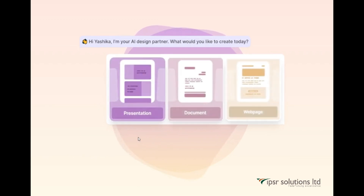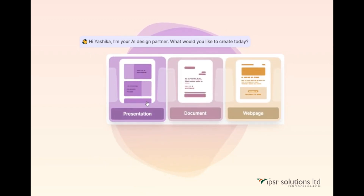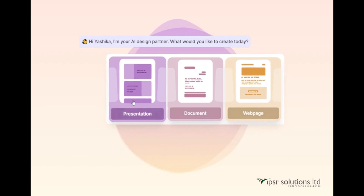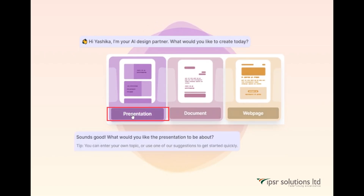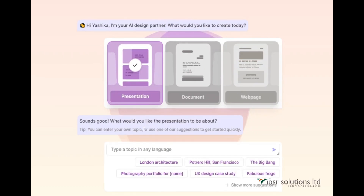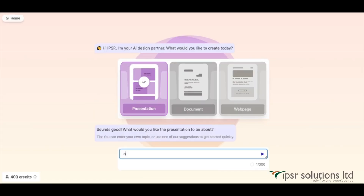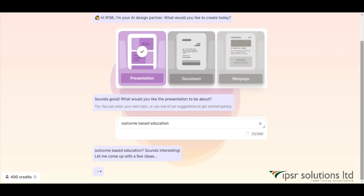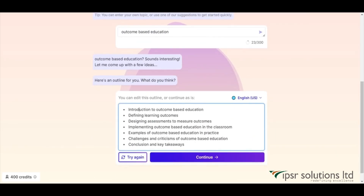The assistant gives three options: presentation, document, or web page. I'm going to select presentation. Next, type in the topic of your presentation — in this case I'm giving the topic as 'Outcome Based Education' and then clicking the send button. Here it has given me an outline of my presentation.